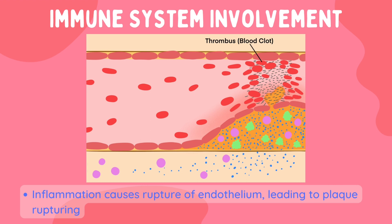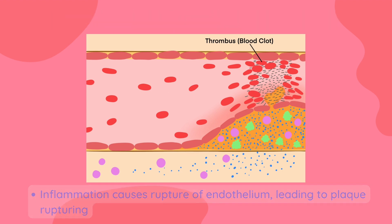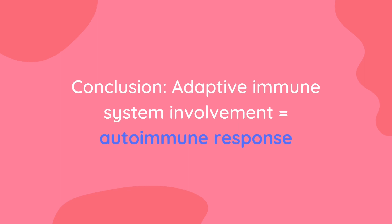Inflammation is the primary cause for the worsening of atherosclerosis because it can lead to plaques being ruptured. When this occurs, blood clots can form and can lead to thrombosis, which is the blocking of blood vessels, and consequently a high risk for heart attacks and strokes. Adaptive immune cells are highly involved in autoimmune conditions, where your own body's immune cells attack healthy cells. The recruitment of helper T cells that attack your own body's endothelium causes an autoimmune reaction. Thus, it can be said that atherosclerosis is a kind of autoimmune condition.